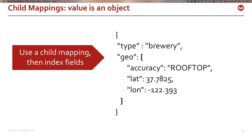If the value of a name-value pair is an object, use a child mapping and then specify the fields like in the previous step. So create a child mapping for 'geo,' and then under that, field mappings for accuracy, lat, and long.